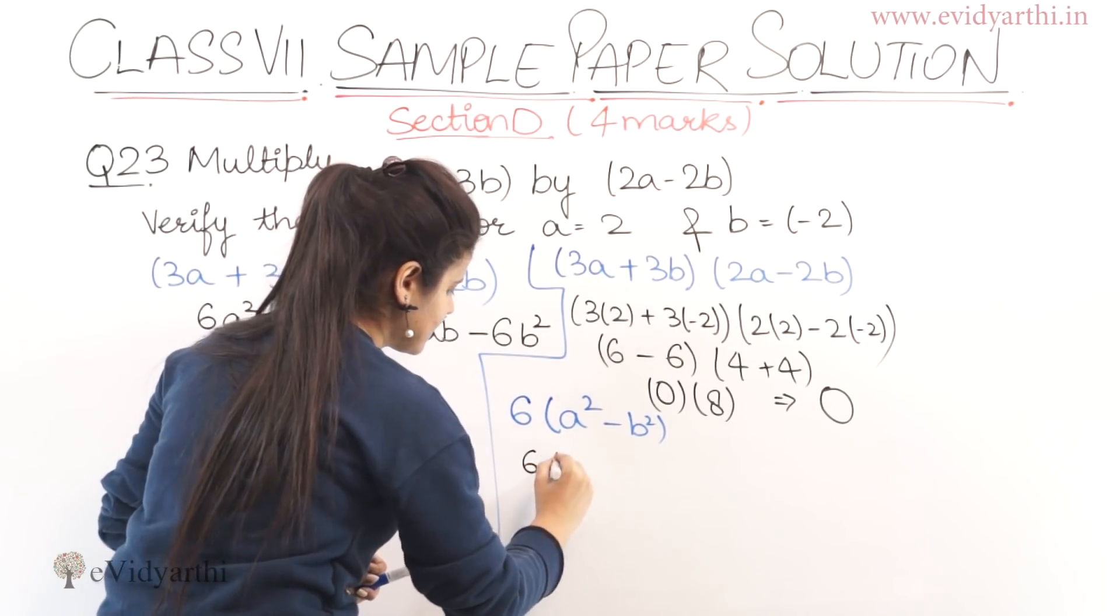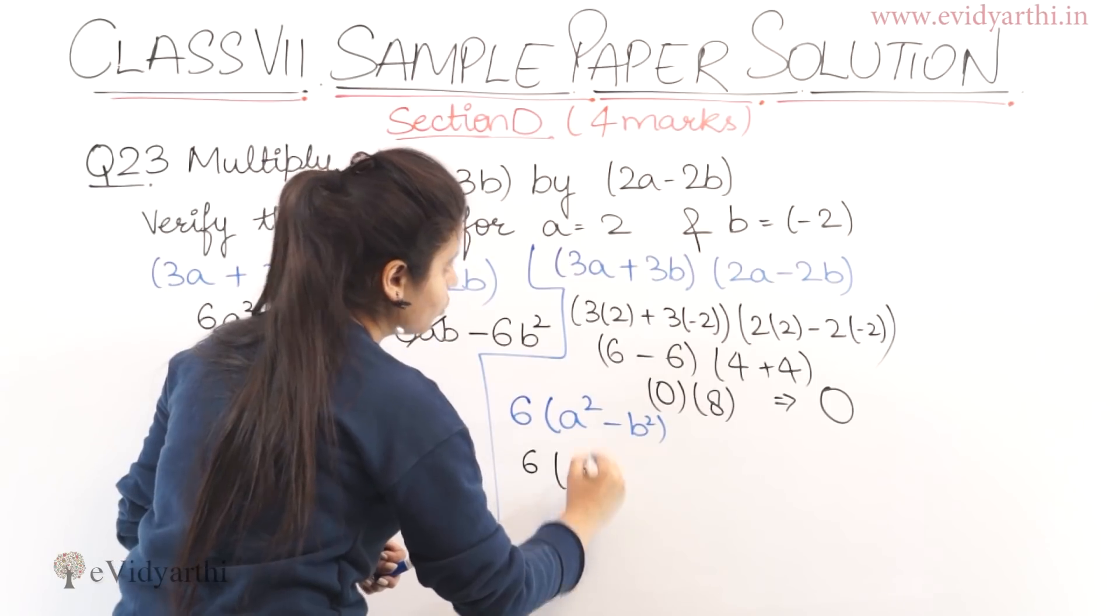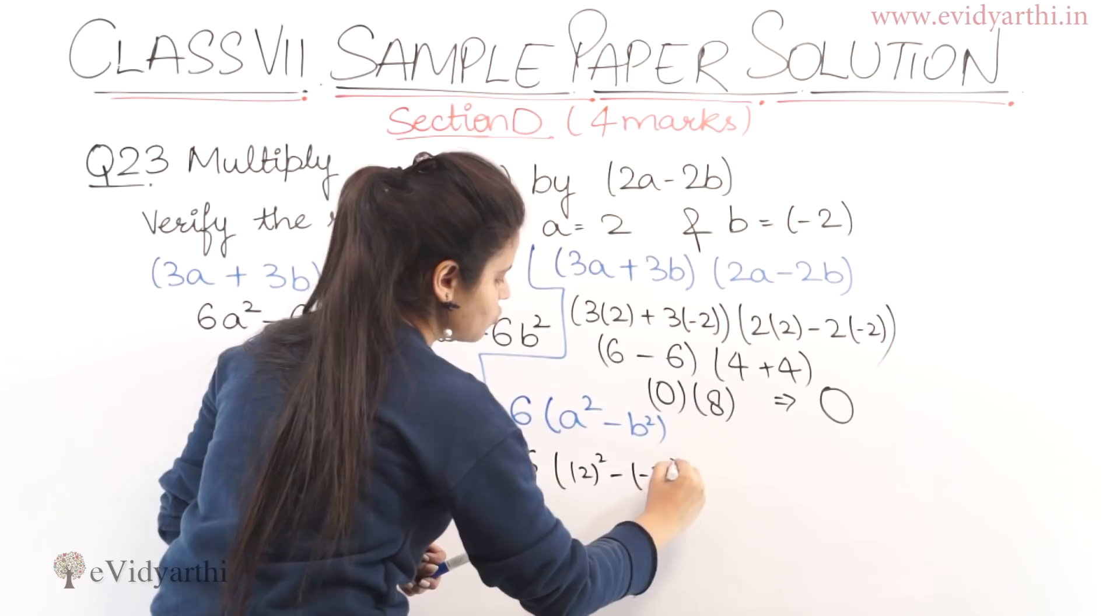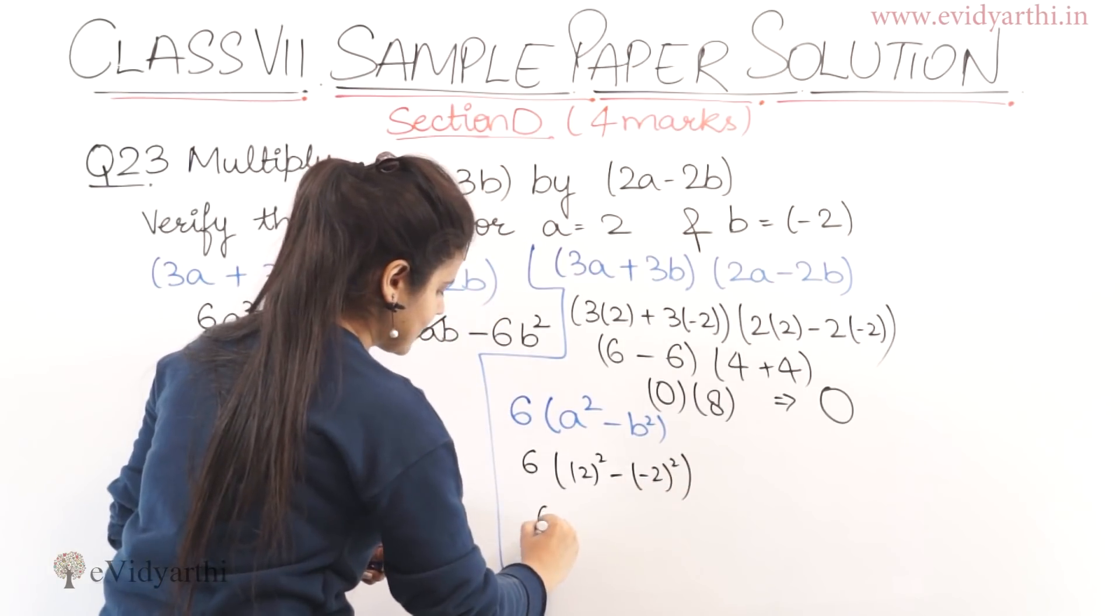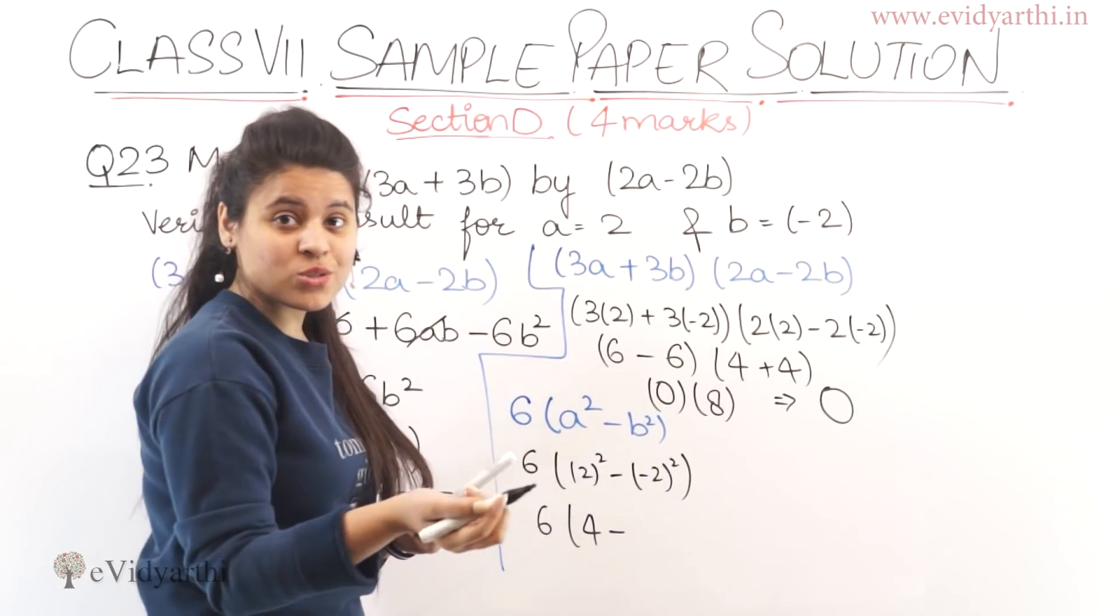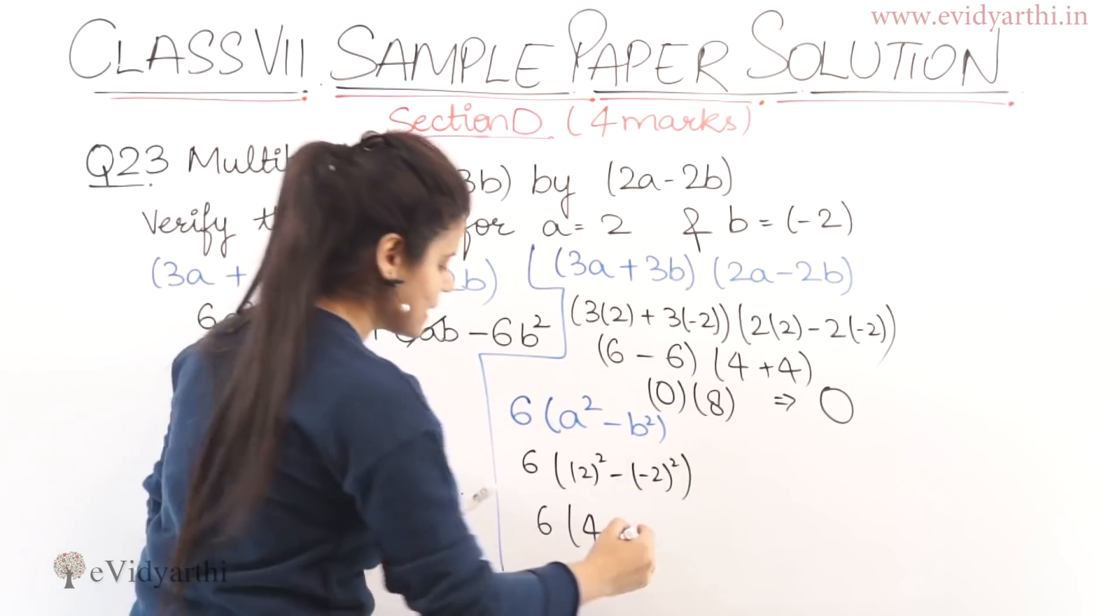We have 6. A is 2, so 2 squared minus b is minus 2, so minus 2 squared. This becomes 6. 2 squared is 4 minus. Minus 2 squared is 2 times 2 which is 4. Minus minus is plus.